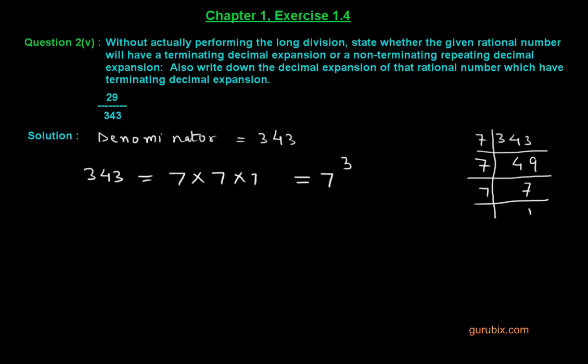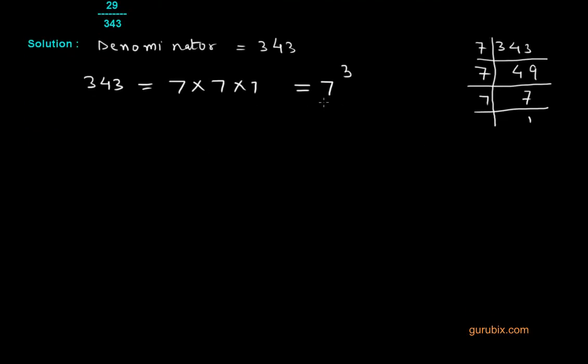And we observe that this 7 raised to 3 is not in the form of 2 raised to m multiplied by 5 raised to n.